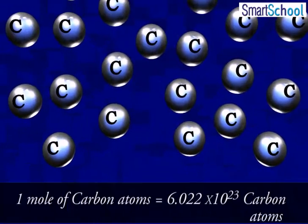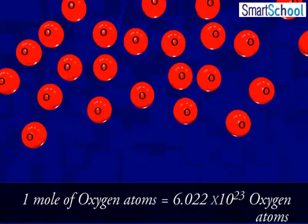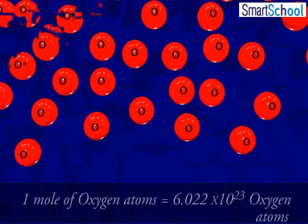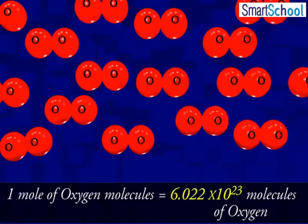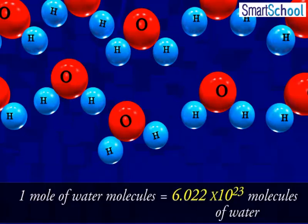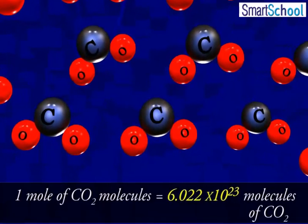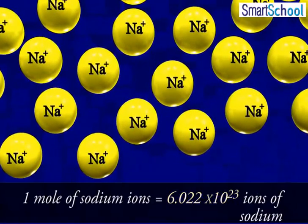1 mole of oxygen molecules is equal to 6.022 × 10²³ oxygen molecules. 1 mole of oxygen atoms is equal to 6.022 × 10²³ oxygen atoms. 1 mole of water molecules is equal to 6.022 × 10²³ molecules of water. 1 mole of carbon dioxide molecules is equal to 6.022 × 10²³ molecules of carbon dioxide. 1 mole of sodium ions is equal to 6.022 × 10²³ ions of sodium.